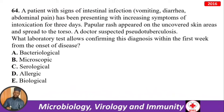A patient with intestinal infection: forming diarrhea, abdominal pain, increasing intoxication for three days, popular rash appearing on uncovered skin spreading to the torso. A doctor suspected pseudo-tuberculosis. What laboratory test confirms the diagnosis within the first week? To isolate one bacteria from many, use bacteriological examination — because pseudo-tuberculosis does not usually cause serious conditions, bacteriological isolation is needed to confirm.